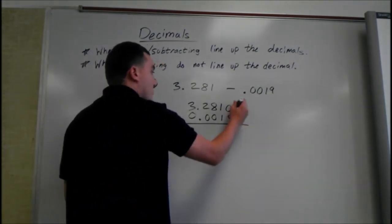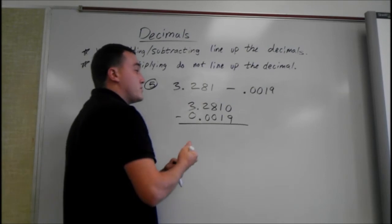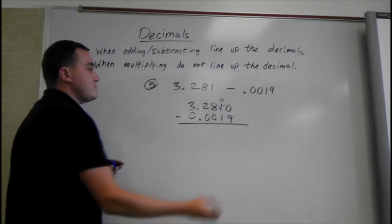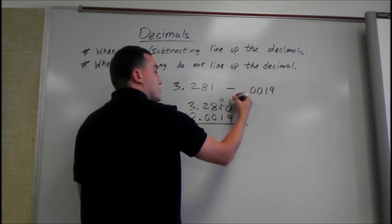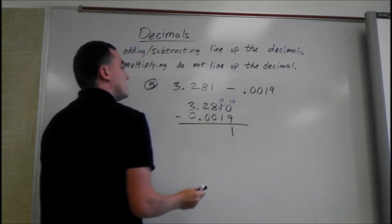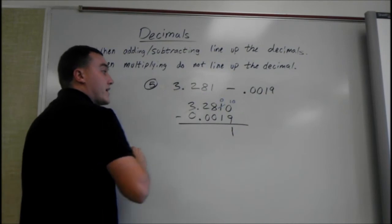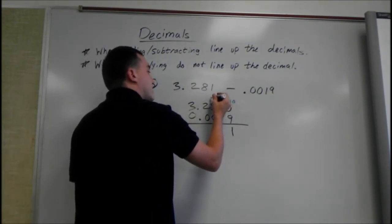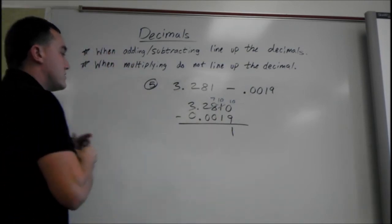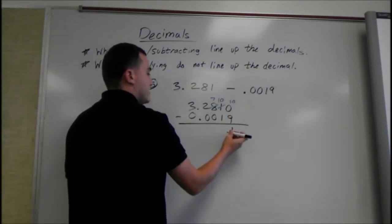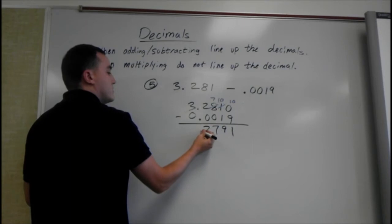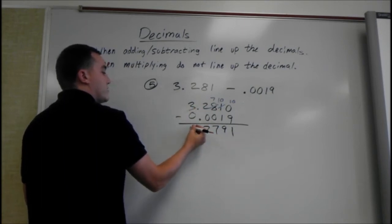First thing, we have 0 minus 9. Since you can't take away 9 from 0, borrow 1 from this. That's going to become a 0, and we can add it on to here. So that's going to be a 10. 10 minus 9 leaves us with 1. Then 0 minus 1. Can't do that again, so we've got to borrow from the 8. 10 minus 1 is 9, 7 minus 0 is 7, 2 minus 0 is 2. Decimal drops down, and 3 also drops down.